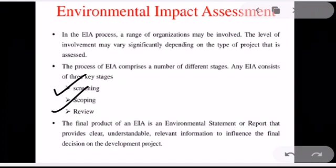The final stage comprises the review of the EIA and its adequacy as a basis for the approving authority to make the decision on development conditions. The ultimate audience of the EIA report is decision makers. The final product of an EIA is an Environmental Impact Statement (EIS) or report that provides clear, understandable, and relevant information to influence the final decision on the development project.